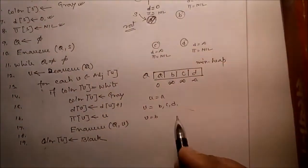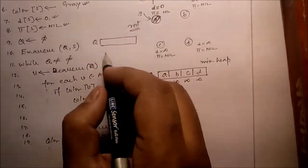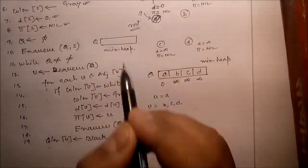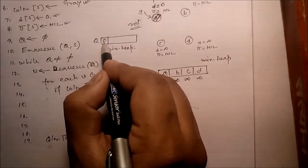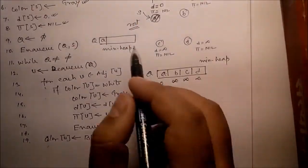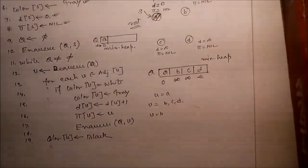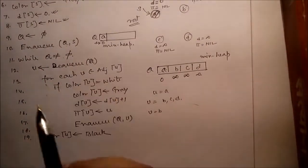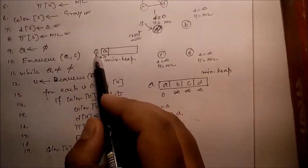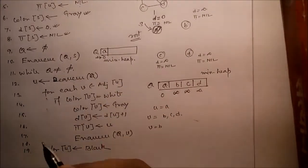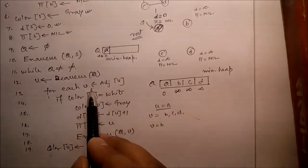Q is the queue data structure. Generally we use a min-heap to implement a priority queue. Enqueue S — insert S, which is the starting node A. Simultaneously store the D value: D of A is zero. While Q is not equal to phi, Q is not empty so we proceed. U equals dequeue — extract from Q — so U equals A.